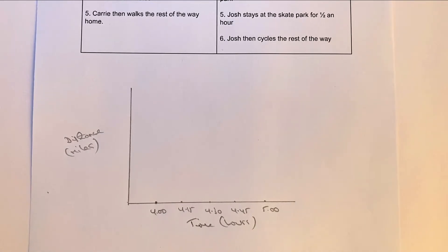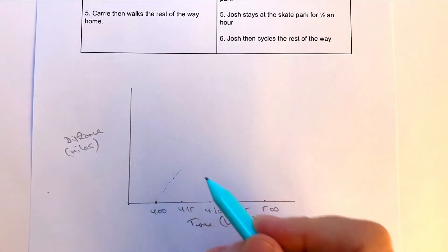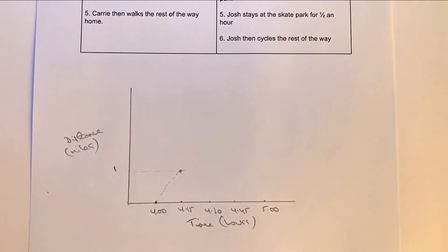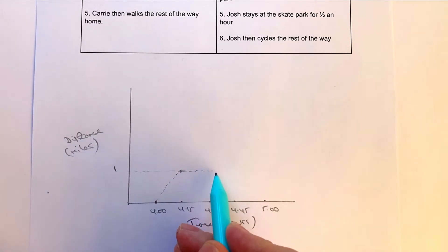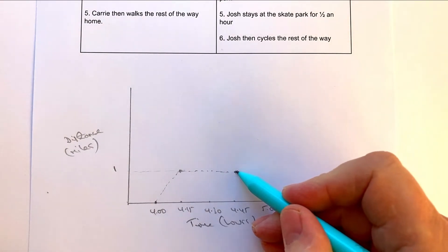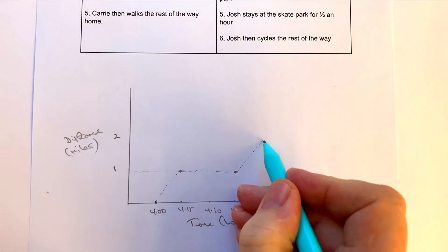Looking at Carrie's journey: she left school at four o'clock and she lives two miles away. She walks at a speed of four miles an hour, so after a quarter of an hour she's actually walked one mile. She then stops in the park and chats with a friend for 30 minutes, so she's stationary through to 4:45. Then she walks the final mile home, which takes her 15 minutes, getting home at five o'clock, two miles away.